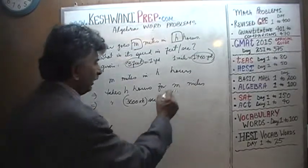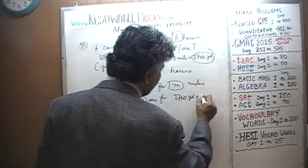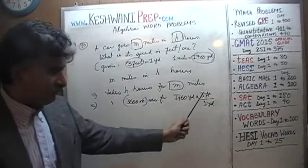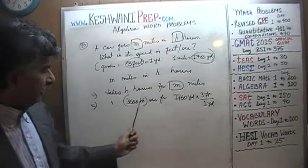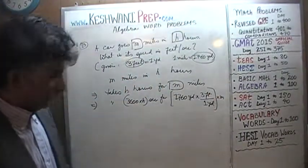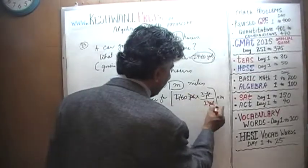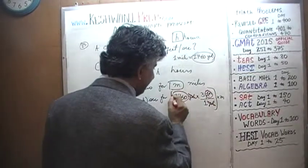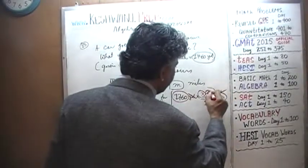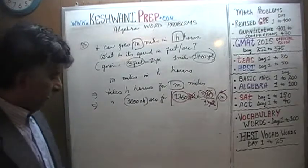Let's convert m miles into feet. We know that one mile is made up of 1760 yards, and one yard is made up of three feet. This quantity represents one mile, but we are taking this time for m miles, so we multiply by m. As you can clearly see, we have yards on the top and yards on the bottom — yards cancel out and we end up with feet: 1760 times 3 times m feet.